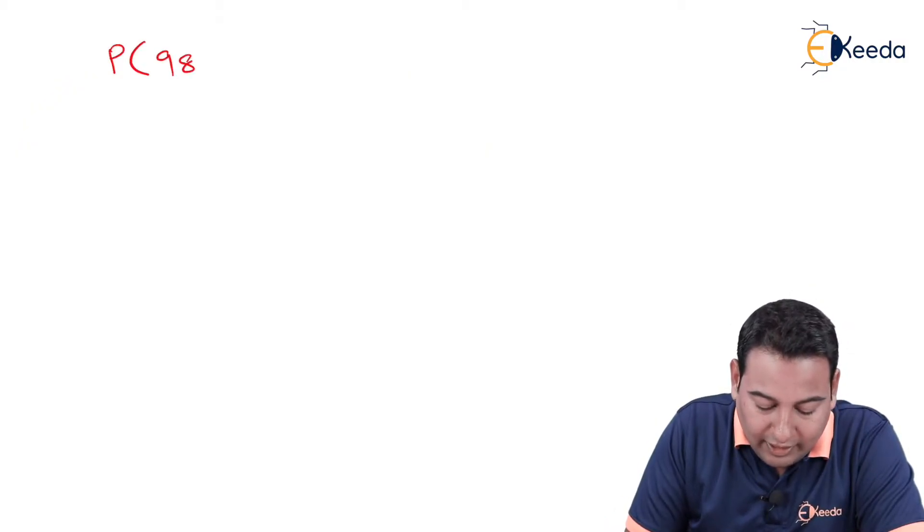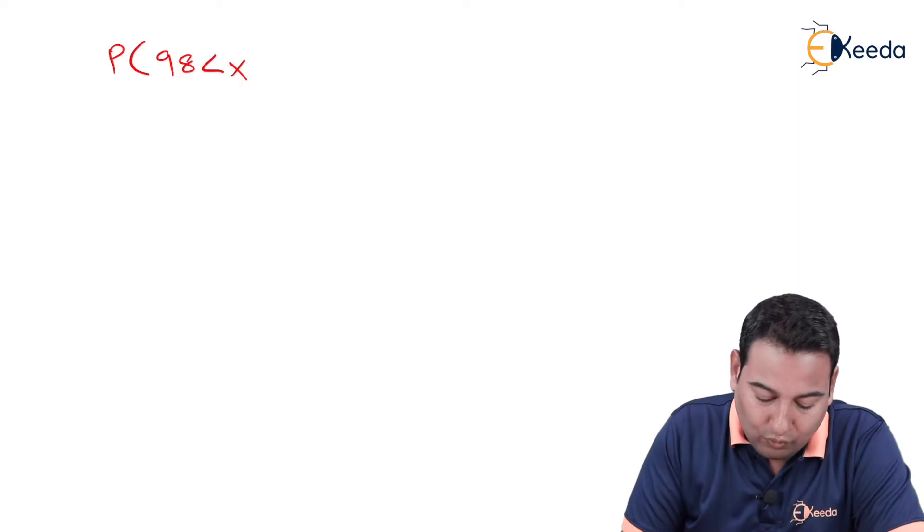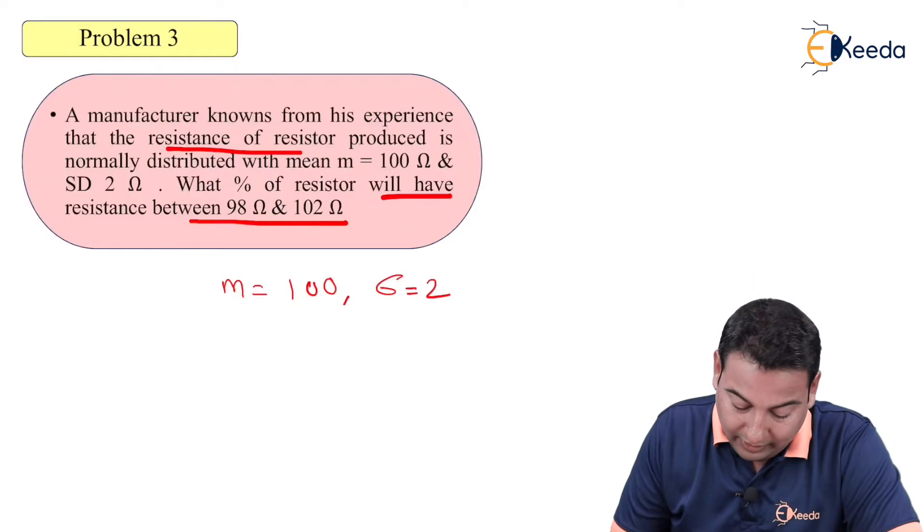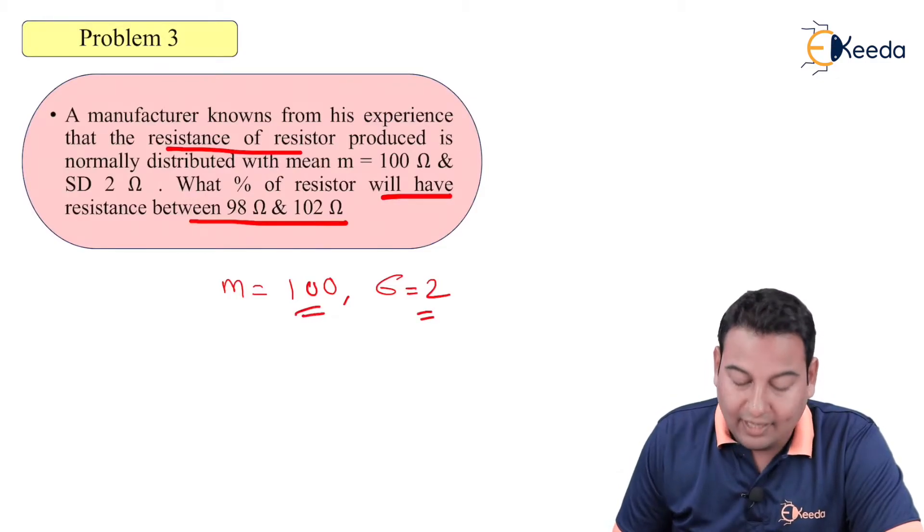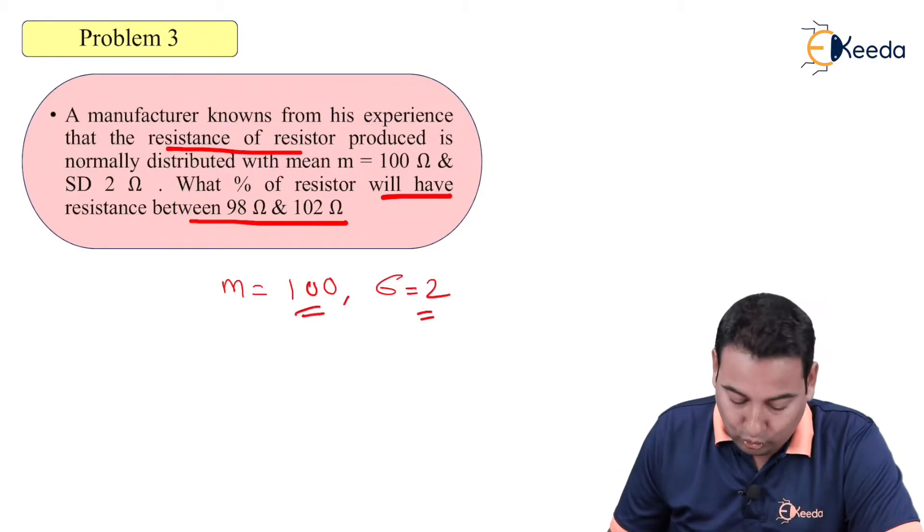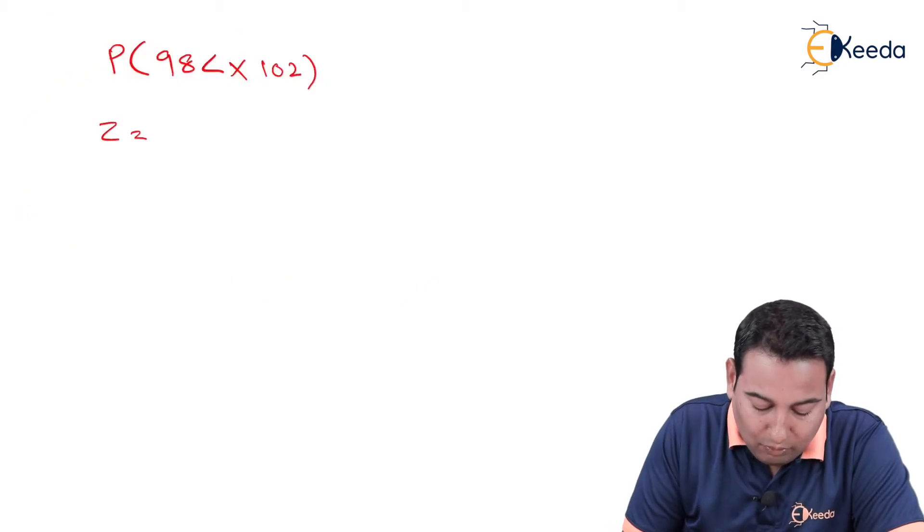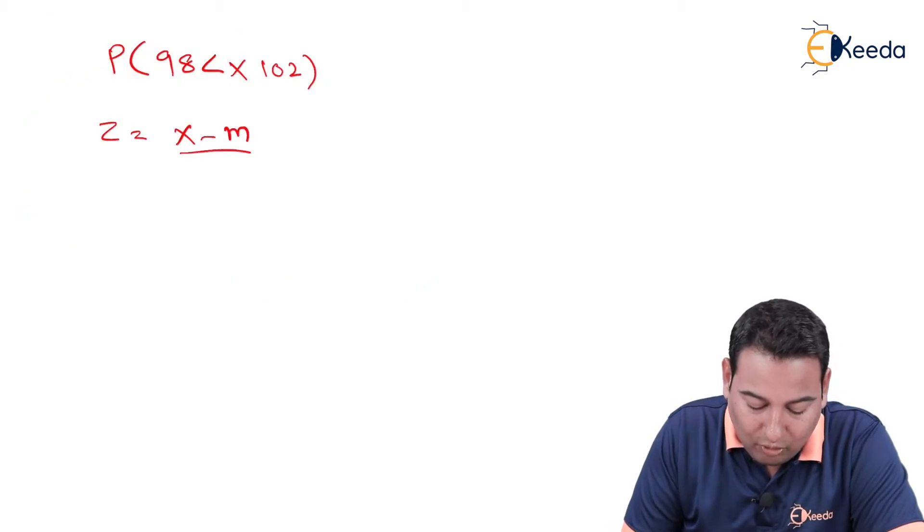It is asked 98 and 102 ohms. We need to find this probability. Here mean is 100 and sigma, that is standard deviation, is 2. Z formula is x minus m upon sigma.